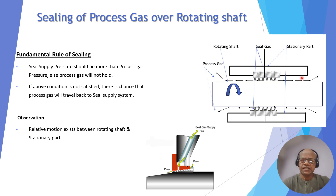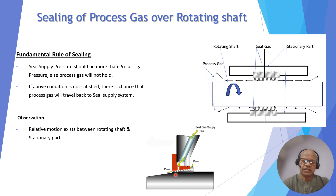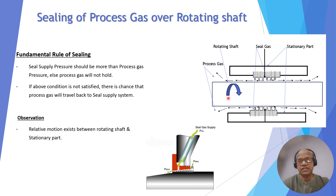Whichever pressure is higher, the seal gas supply must exceed it. In this arrangement, the seal gas seals the process side, and the remaining gas vents toward the bearing housing. This is important because all rotating machines have such arrangements, and understanding the sealing of these is essential.